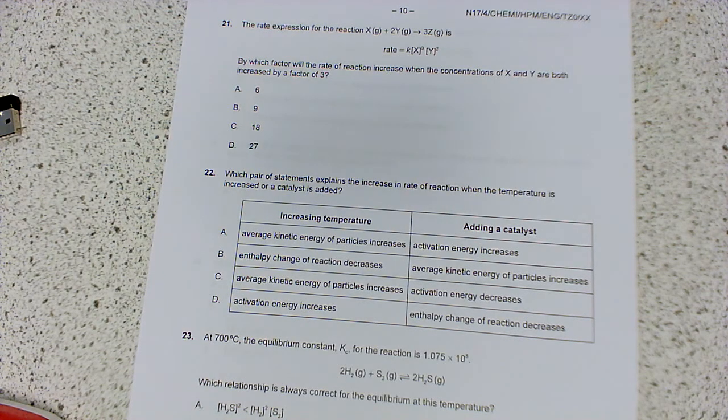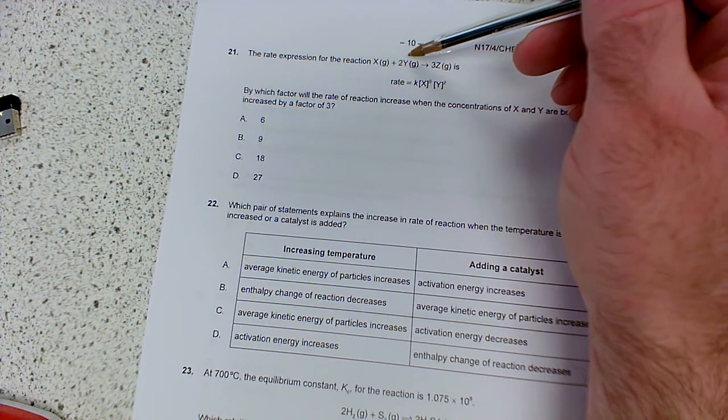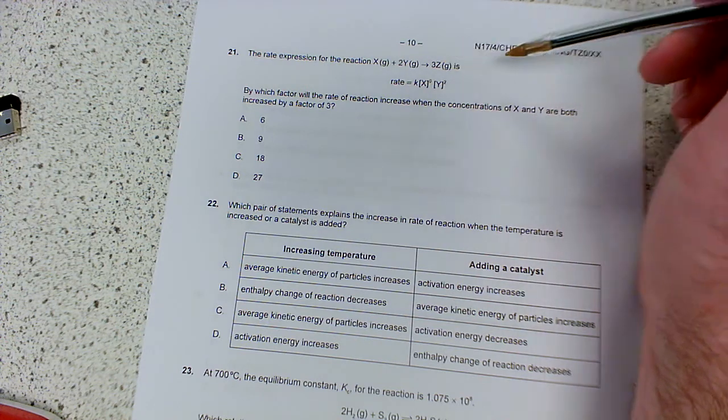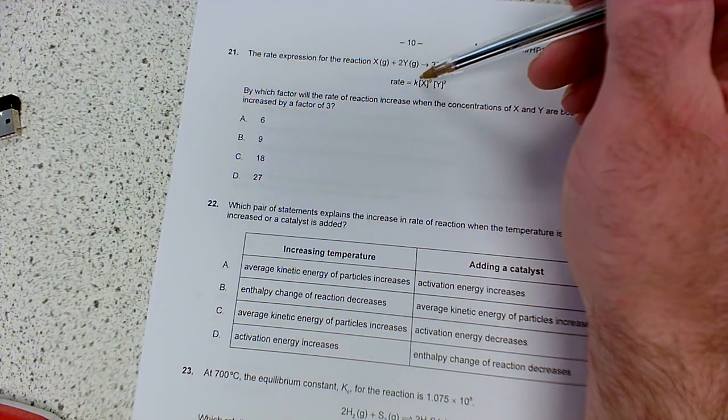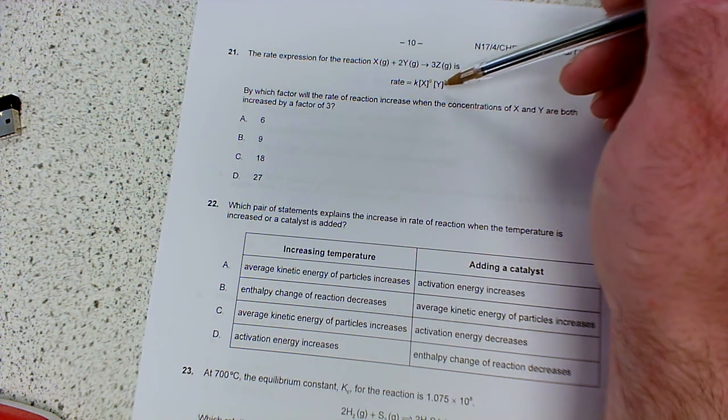Okay, so this is the next video. This is questions 21 to 30 of the November 2017 paper 1. What we've got is the rate expression for the reaction X plus 2Y giving us 3Z. So the rate is K, the rate constant, times X to the power 0, 0 order, and then Y squared, second order with respect to Y.